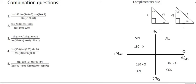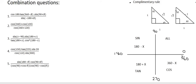The first thing I've written down is the complementary rule, which says that sin and cos are equal to each other as long as their two angles add up to 90 degrees. Then the next thing is the special triangles, which can be used if you have a 45, 30, or 60 degree angle.